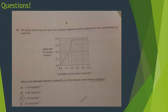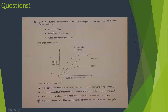The graph shows initial rate of reaction against substrate concentration. As substrate concentration increases, the initial rate increases until no further increase occurs — that is Vmax, approximately 0.28. Km is the substrate concentration at half Vmax. Half of 0.28 is approximately 0.14, and reading across the graph the corresponding substrate concentration is approximately 1.5, so the answer is option C.